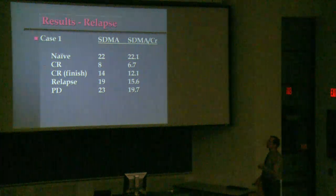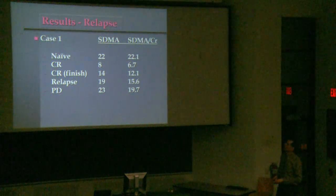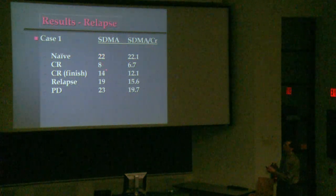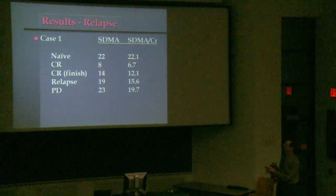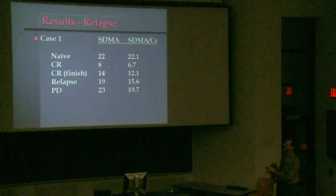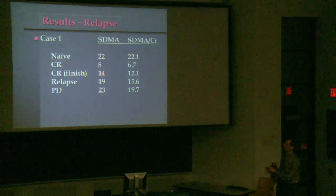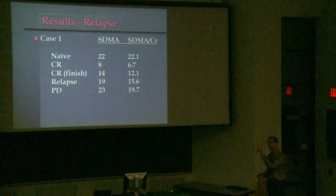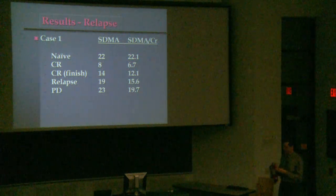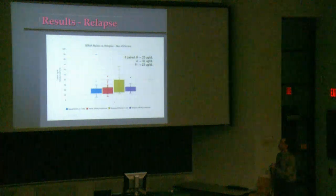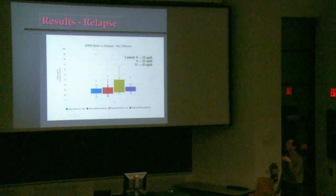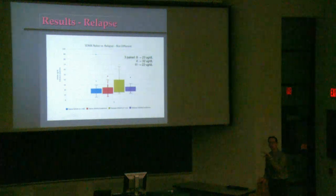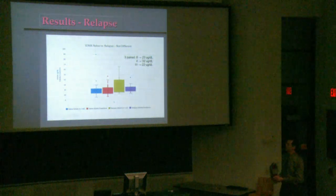Following Louie longitudinally: when naive, his SDMA was 22; in remission it dropped to 8. As the protocol neared completion, it began to rise. At relapse it was 19, and with progressive disease it reached 23 — closely following his bulky disease status. Looking at all other dogs comparing naive lymphoma versus relapse, there was essentially no difference, confirming that bulky disease whether before or after treatment showed the same elevated SDMA results.